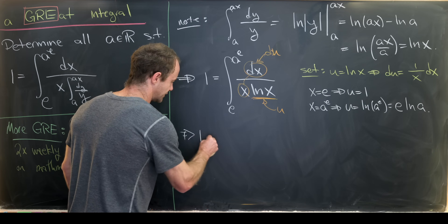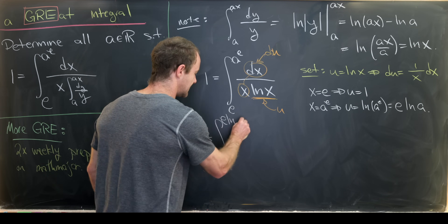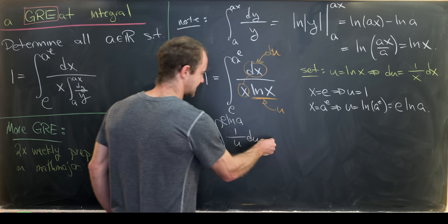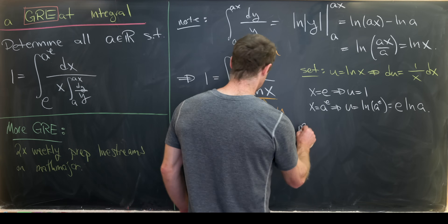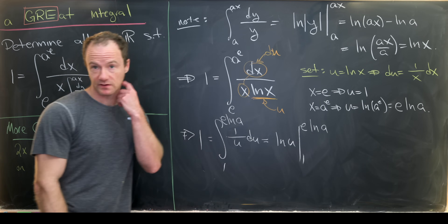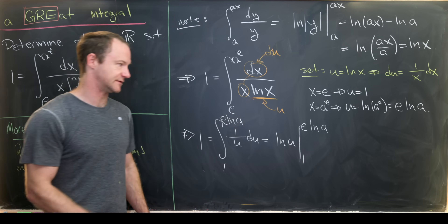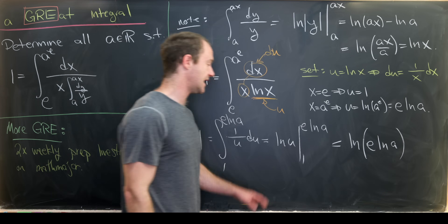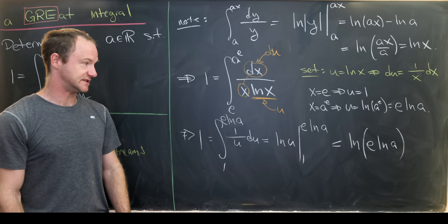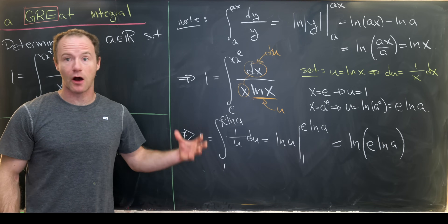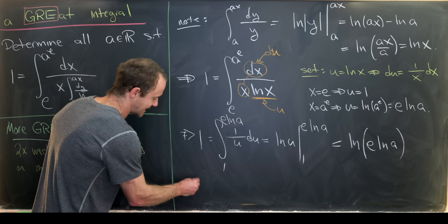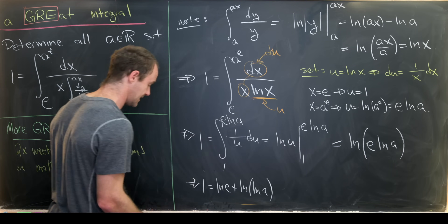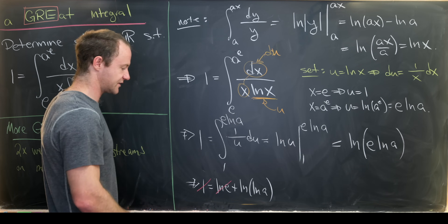That gives us: 1 equals the integral from 1 to e times the natural log of a of 1 over u du. Applying the fundamental theorem of calculus, the antiderivative gives us the natural log of u evaluated from 1 to e times the natural log of a. We don't need absolute values since this is a positive region. This becomes the natural log of e times the natural log of a, minus the natural log of 1. The natural log of 1 is 0, and we can expand the outer natural log as a sum: 1 equals the natural log of e plus the natural log of the natural log of a. Since the natural log of e is 1, that cancels the 1 on the left side.